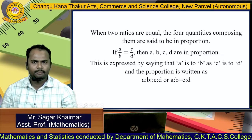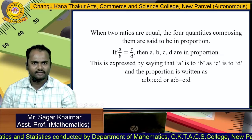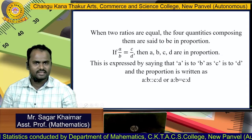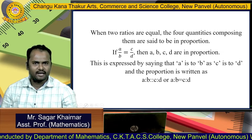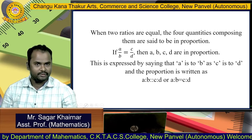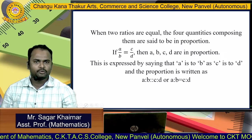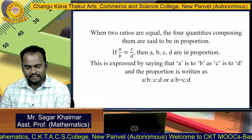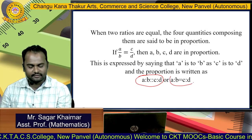For example, if A/B = C/D, then we say that A, B, C, D are in proportion. This is expressed as 'A is to B as C is to D,' and the proportion is written as A:B = C:D.